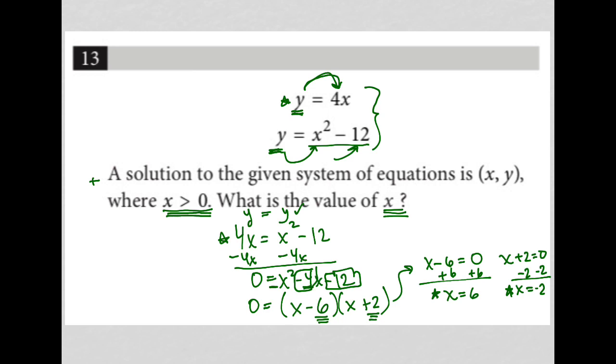But in this case, we are told that x has to be greater than 0, which means we're not going to count x equals negative 2. Therefore, our answer is x equals positive 6. So our answer here is 6.